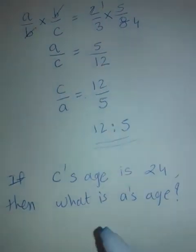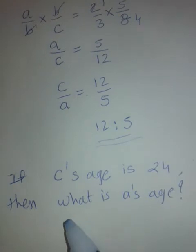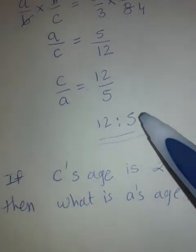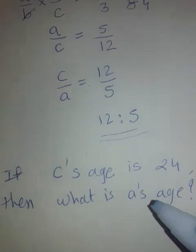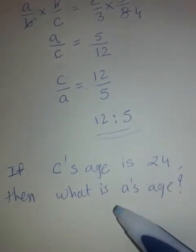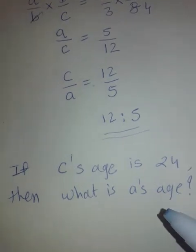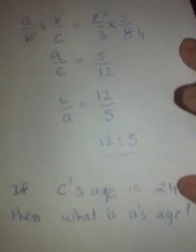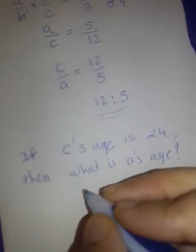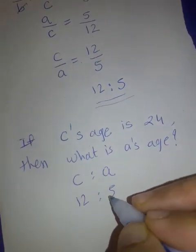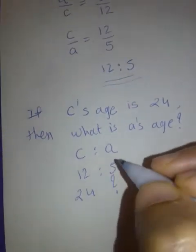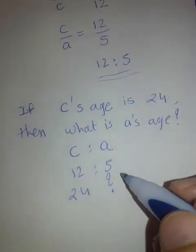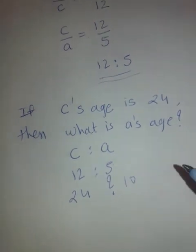In this same problem they may add: if C's age is 24, what is A's age? C to A is 12 to 5. Now 12 is 24, so 5 will be 10. A's age will be 10. What they basically want is the relation between A and C, which we found by doing this multiplication. So if C is 24, A is 10.